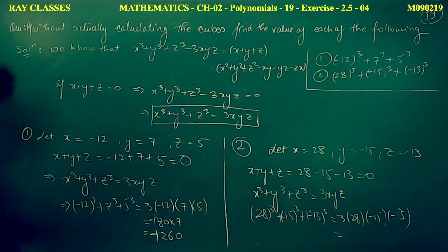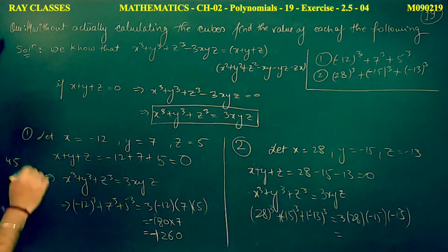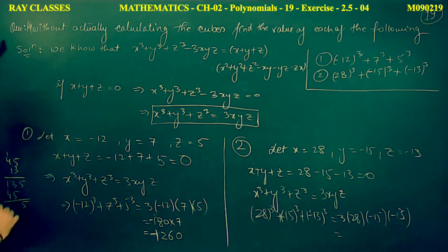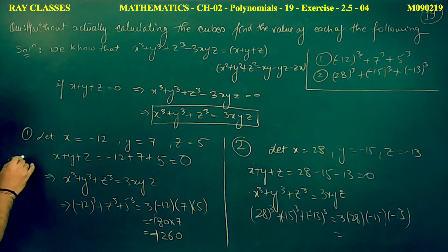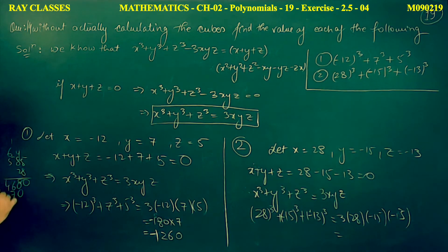So 28 cubed plus (minus 15) cubed plus (minus 13) cubed equals 3 times 28 times (minus 15) times (minus 13). The two negatives make the product positive. Computing: 15 times 13 equals 195; wait — 45 times 13 equals 585; then 585 times 28 gives 16380. So the answer is positive 16380.